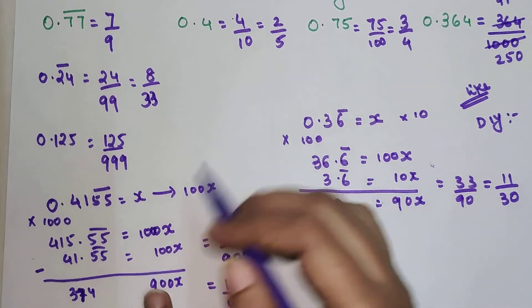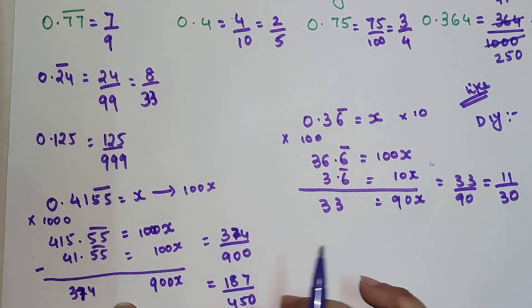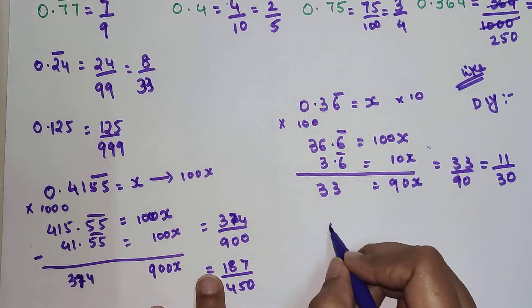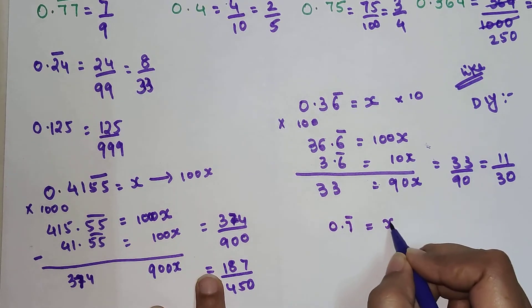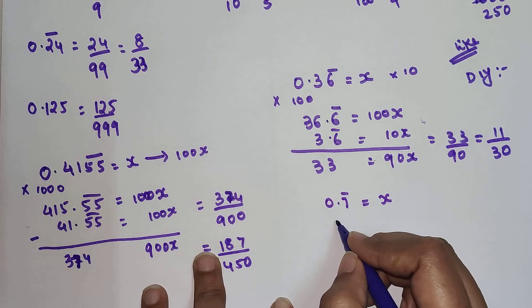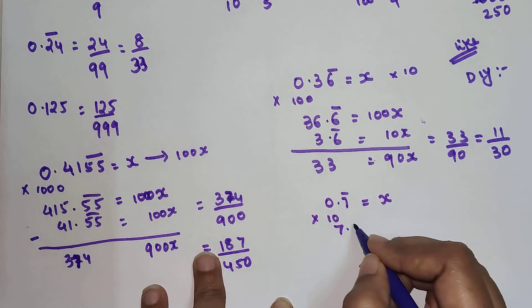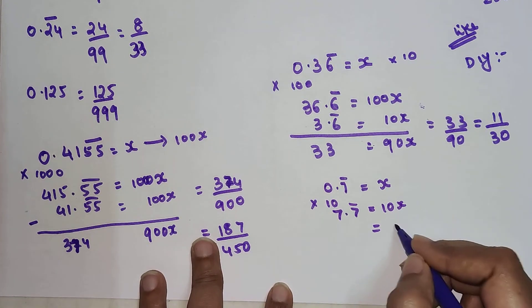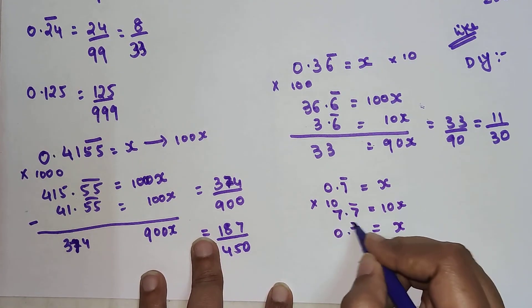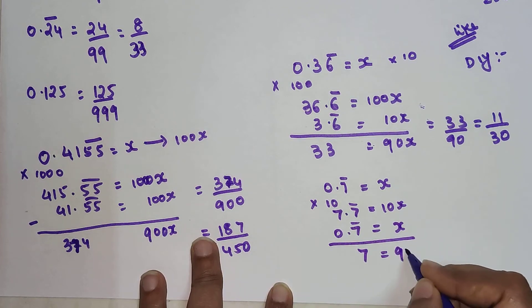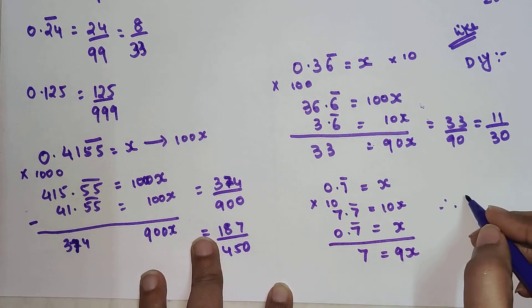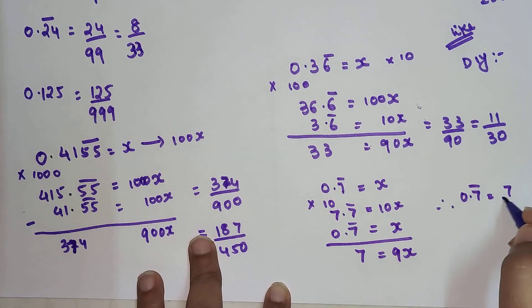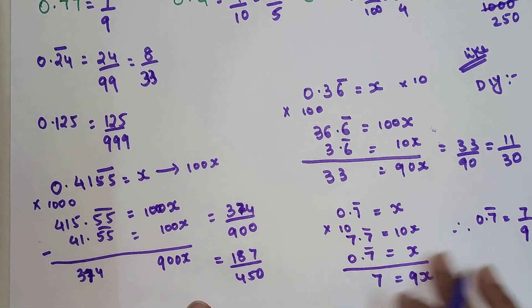Now you might be wondering, for this there is a method. So what will be the method for this one? The method is also very simple. If you just had 0.7 recurring and let's keep this as x, we will multiply this with 10. So we will get 7.7 equals 10x. And we will just subtract the x part of it, so 0.7. We will be left with 7 equals 9x. Therefore, your answer, which is 7 bar or x, is equal to 7 upon 9.